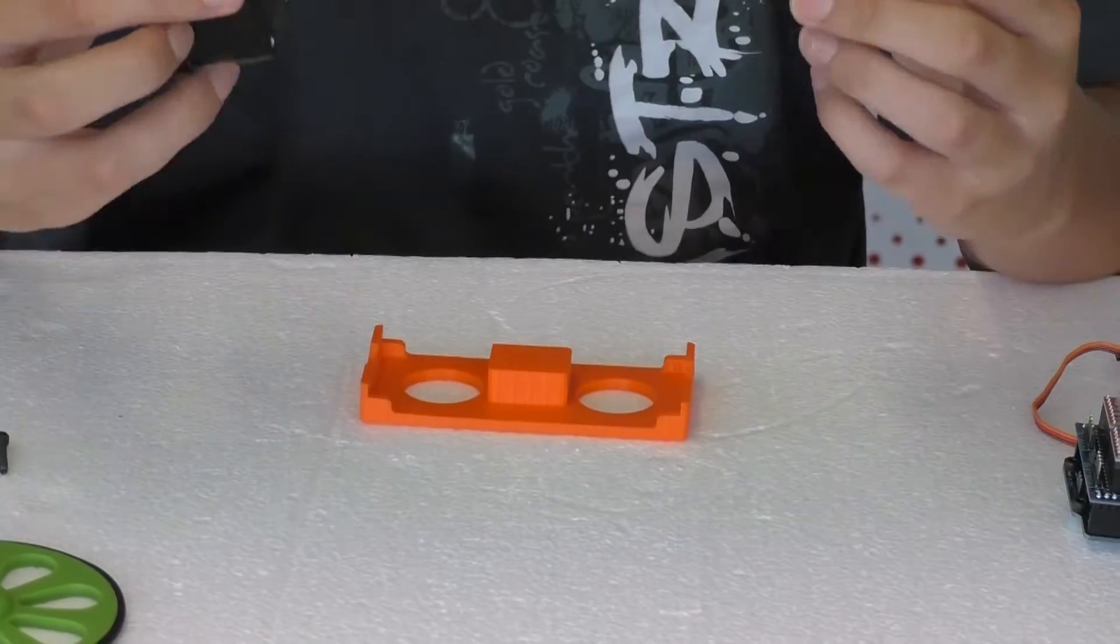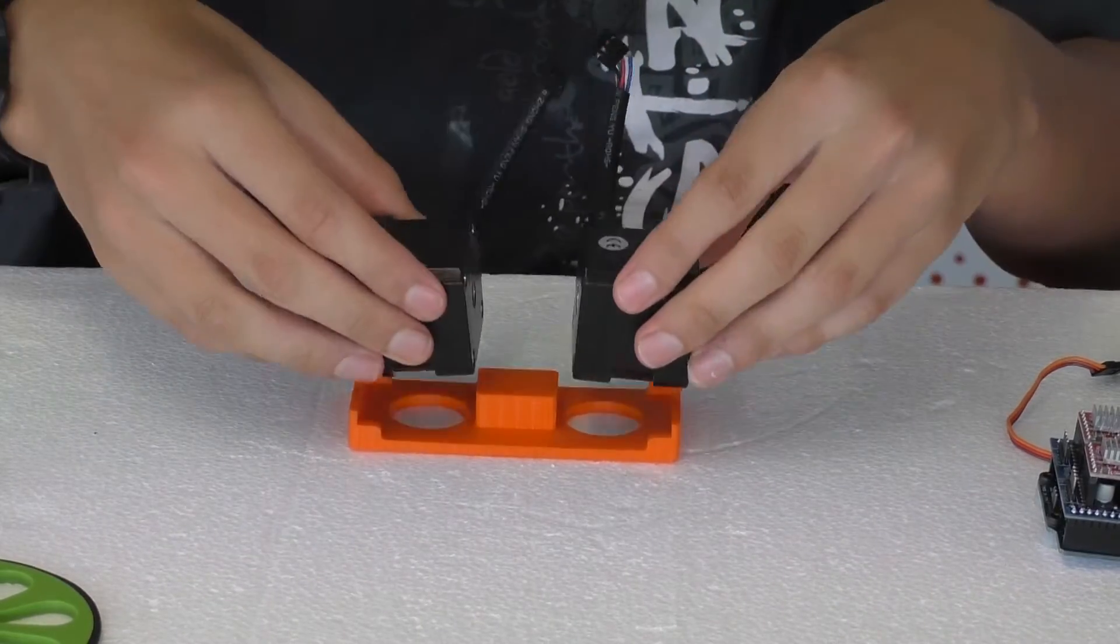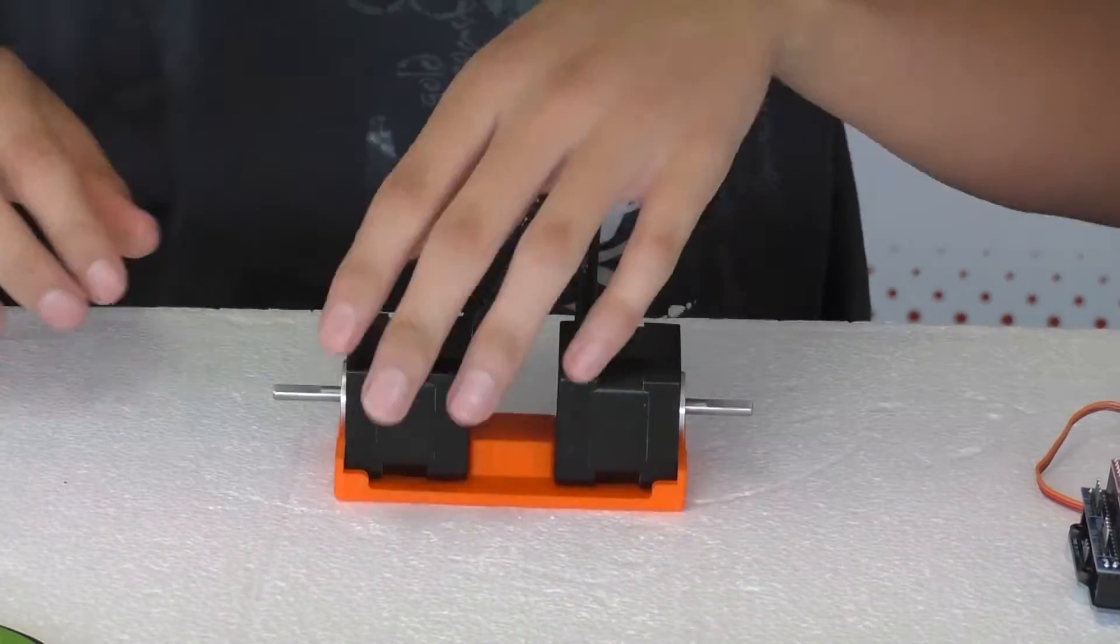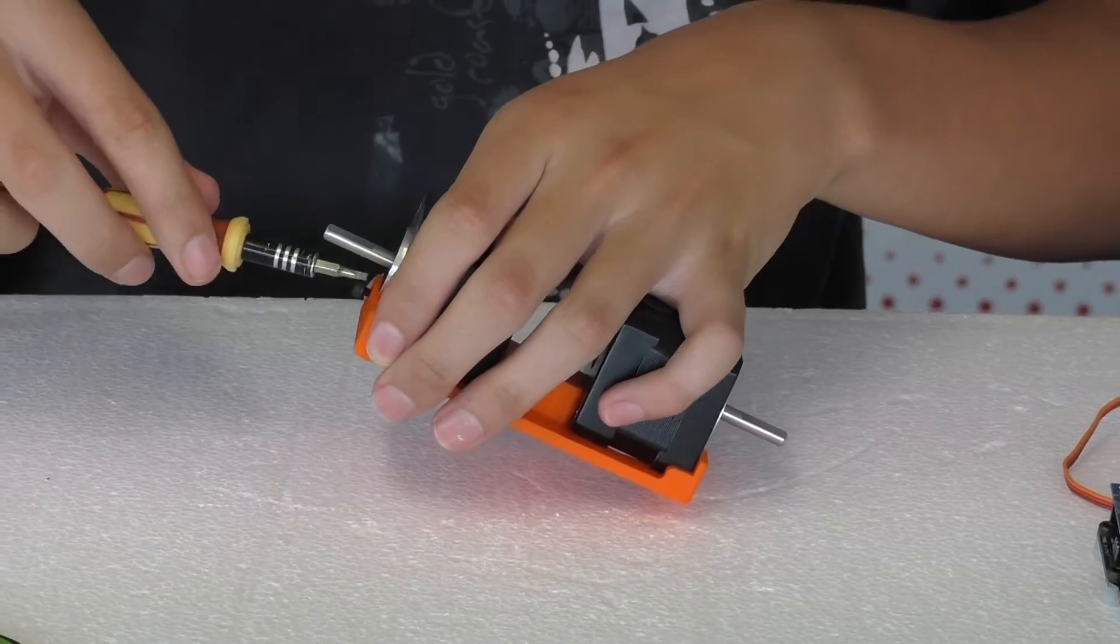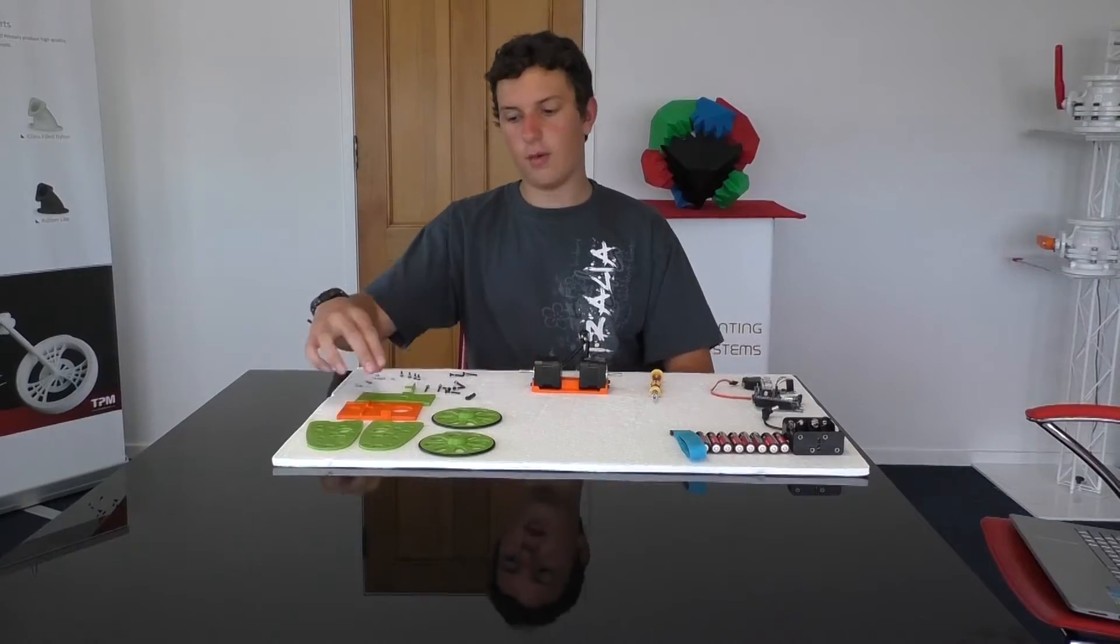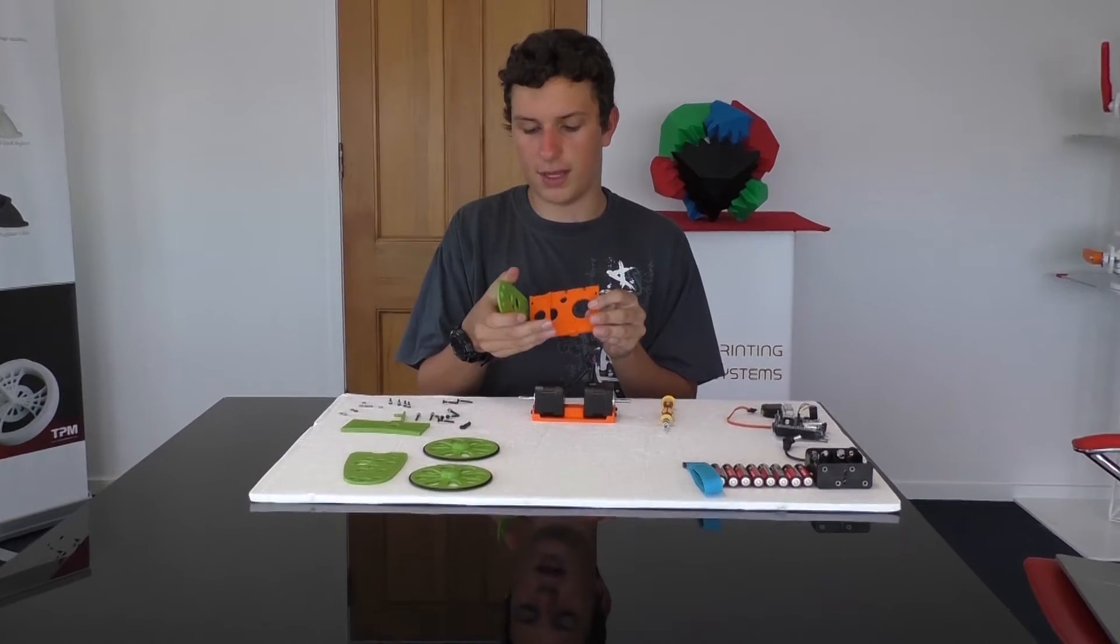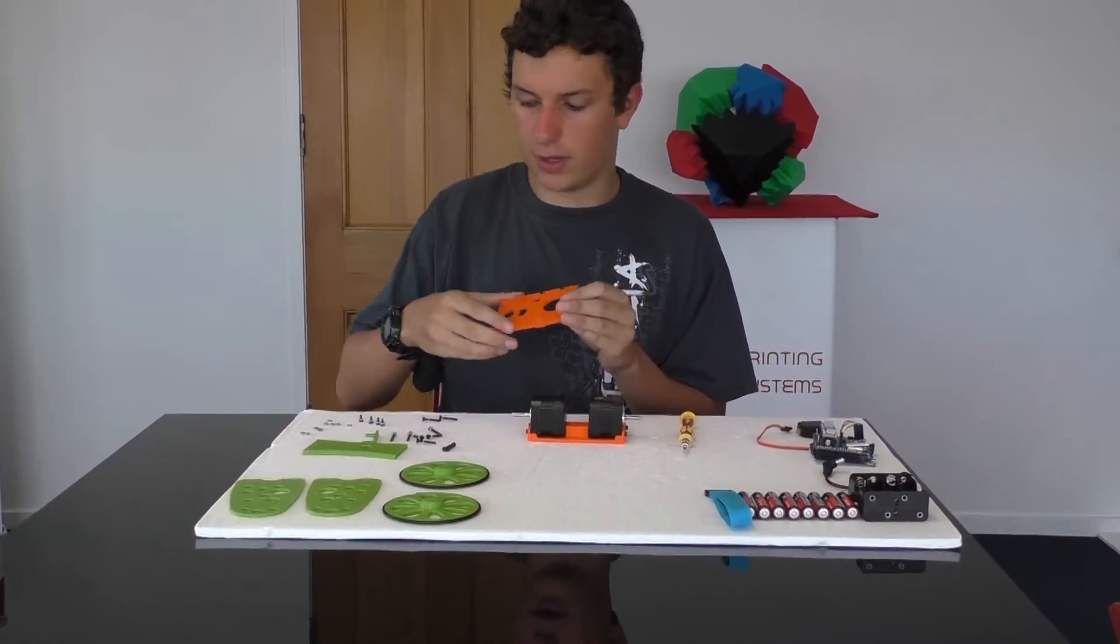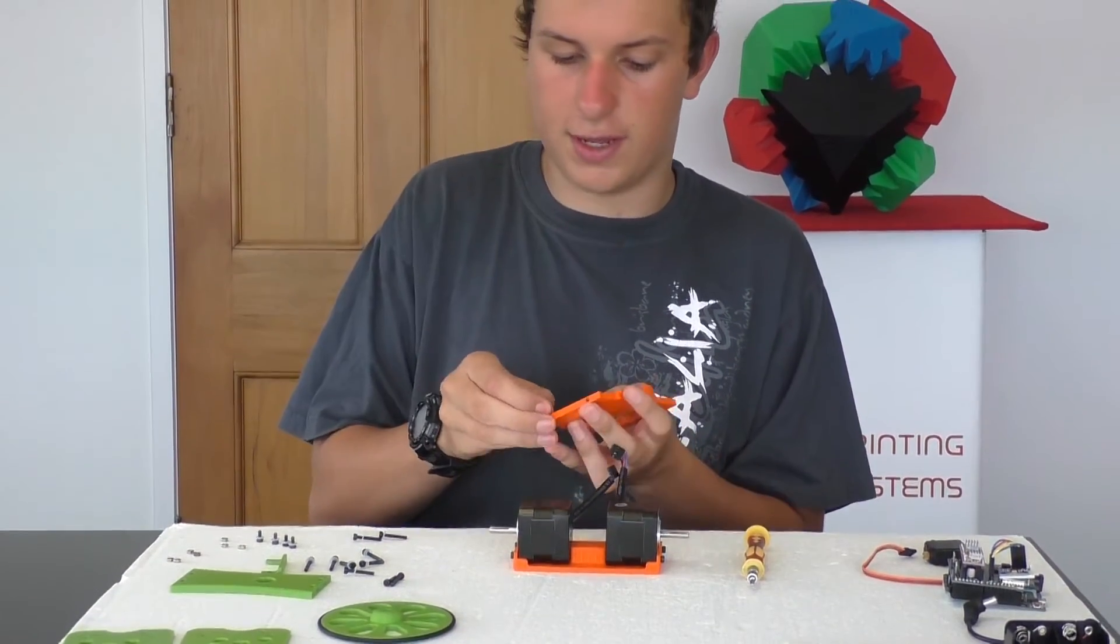Now, we need to attach the side panels to the second floor. You'll need to put in four nuts for each pole on the side.